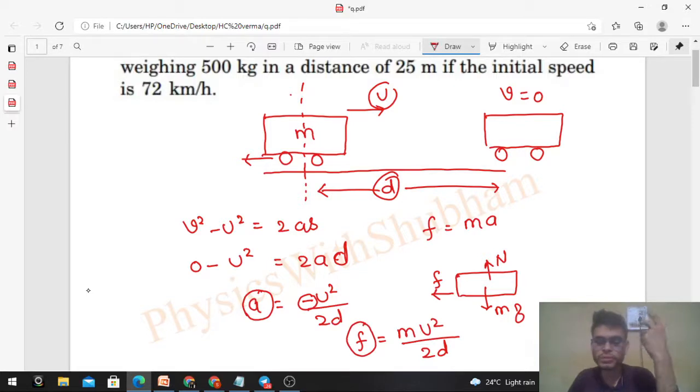This is the value of friction. Now you can substitute the values to find the numerical value. So m·u²/2d: m is 500 into u² - 72 kilometer per hour which is 20 meter per second - so 20²/2 × d, where d is 25.